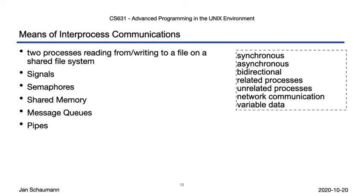After that, we'll talk about our very good friend the UNIX pipe. Pipes require synchronous communications and are unidirectional — a process reading from a pipe can't write data back to the other process through that same pipe. They require a common ancestor process and don't work over the network, but do allow for variable data to be communicated.